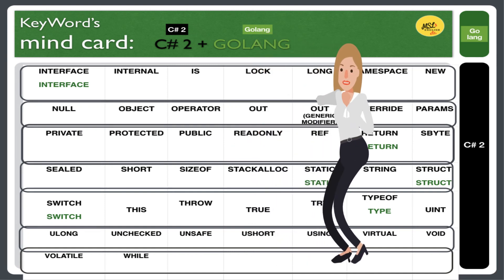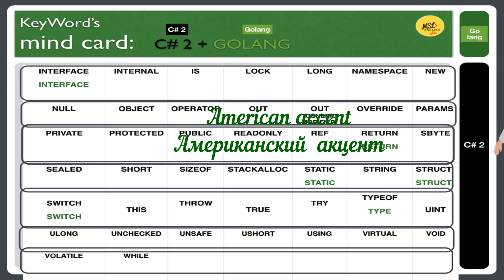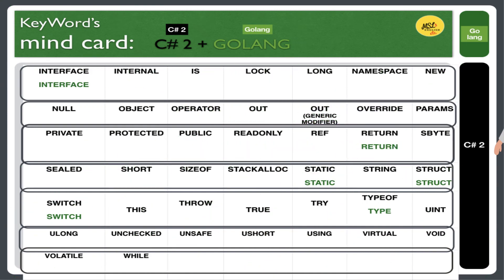Hi guys. Let's get started to compare and repeat two computer languages — second table from the letter I to the letter W — C# and Go language. Please listen to my American accent. I will speak slowly. Interface. Internal. Is. Lock. Long. Namespace. New. Null. Object. Operator. Out. Out — generic modifier. Override. Params. Private. Protected. Public. Readonly. Ref. Return. Sbyte. Sealed. Short. Sizeof. Stackalloc. Static. String. Struct. Switch. This. Throw. True. Try. Typeof. Uint. Ulong. Unchecked. Unsafe. Ushort. Using. Virtual. Void. Volatile. While. Guys. Well done.